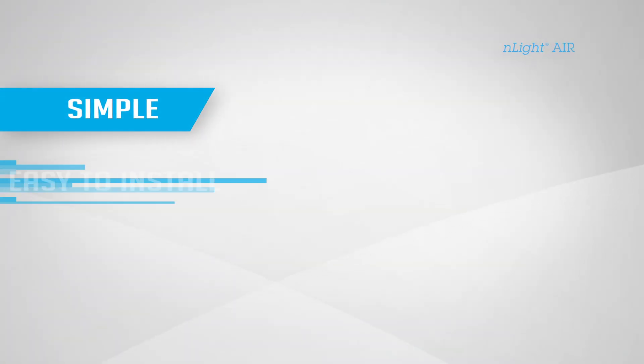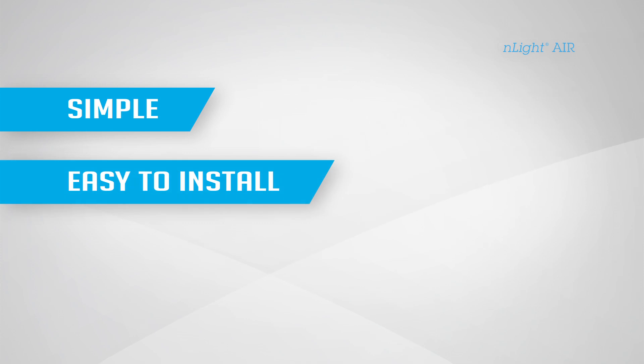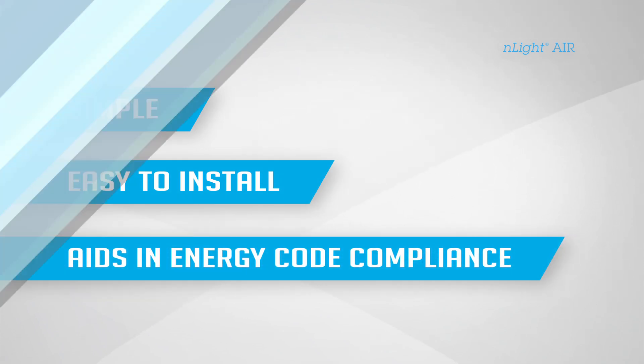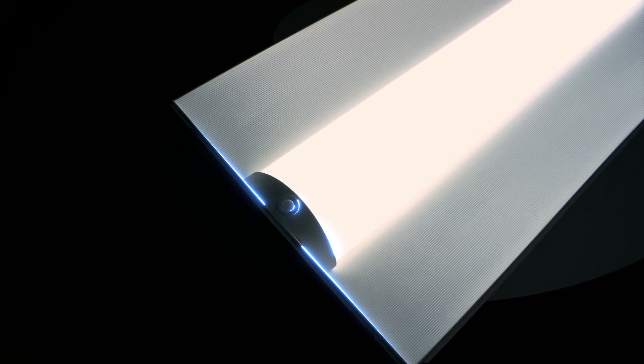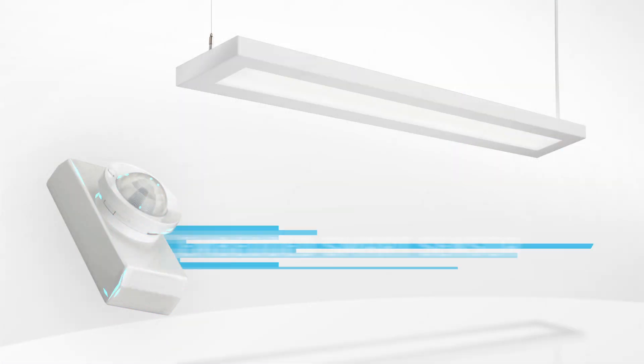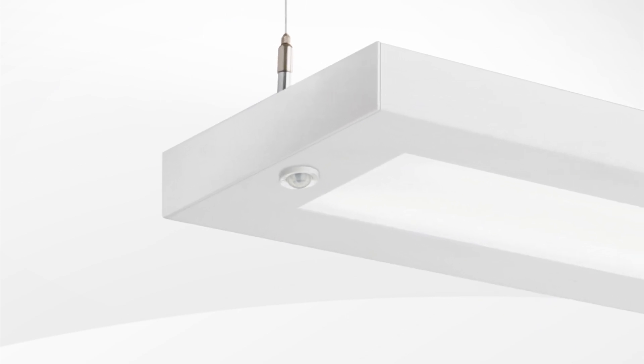nLight Air is simple, easy to install, and aids in energy code compliance. With nLight Air enabled fixtures, the occupancy and daylight sensor is integrated into the fixture for easy installation. The embedded smart sensor with integrated wireless communications simplifies installation since there is only one component to install in the ceiling: the fixture.